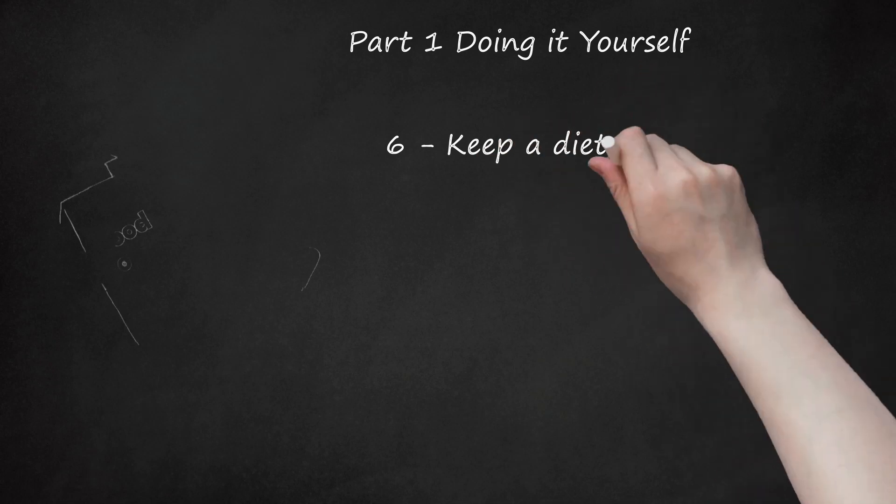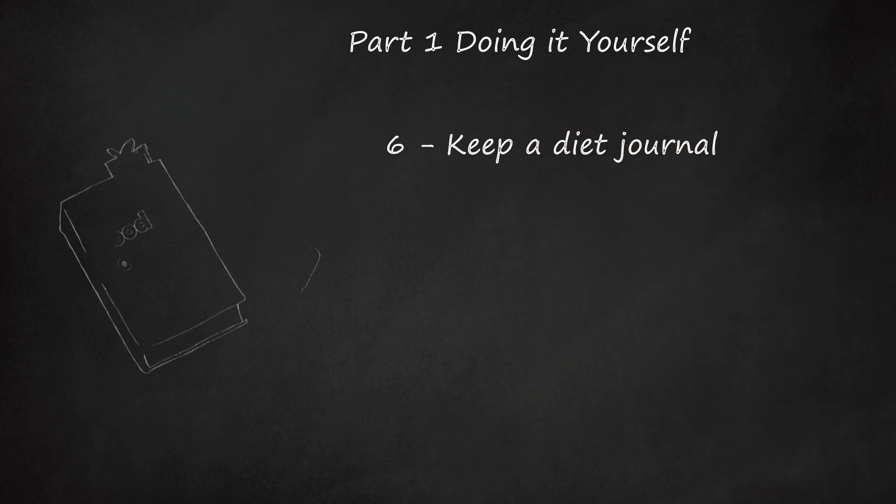6. Keep a diet journal. Studies have found that people who keep track of what they eat by writing it down lose more weight and keep it off than those who don't. That's because writing down what you eat holds you more accountable to the decisions you make and helps you notice patterns in your diet so that you can determine what works and what doesn't.